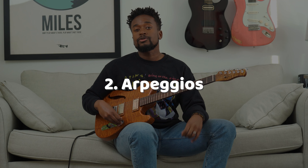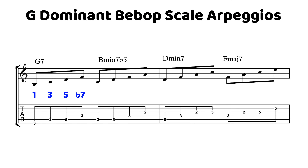The next tip for improving your bebop vocabulary is to start integrating arpeggios into your lines. Within the dominant bebop scale, we have four arpeggios that are all built off of the chord tones of G7: G, B, D, and F. Off of G, we just have G7. Off of B, we have B minor 7 flat 5 — that's B, D, F, and A. Notice that A is going to give me tension 9 over a G7 chord.